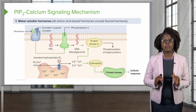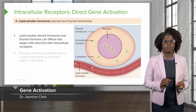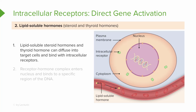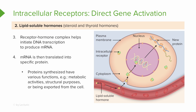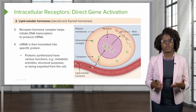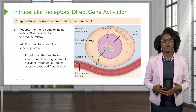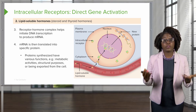Now that we've discussed how second messengers work, let's take a closer look at how genes are activated by these proteins. Lipid-soluble steroid hormones and thyroid hormone can actually diffuse directly into the target cell and bind to receptors inside the cell — your intracellular receptors. From here, they form a receptor-hormone complex that enters the nucleus and binds to a specific region of the DNA. This initiates DNA transcription to produce certain mRNAs. Once the mRNA is produced, it is translated into specific proteins in the cytoplasm of the cell. These synthesized proteins have various functions, including inducing metabolic activity, creating structures, or being exported or secreted from the cell.